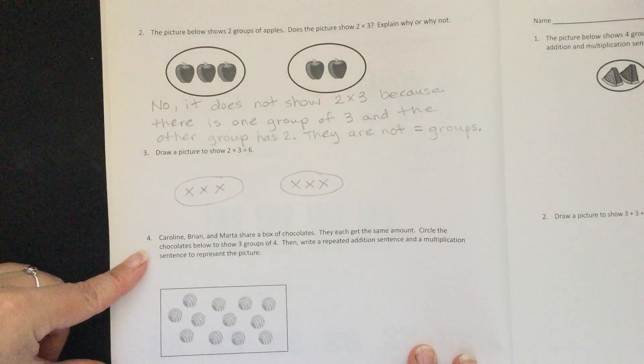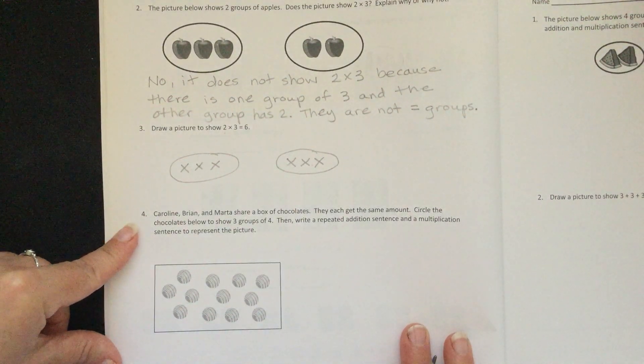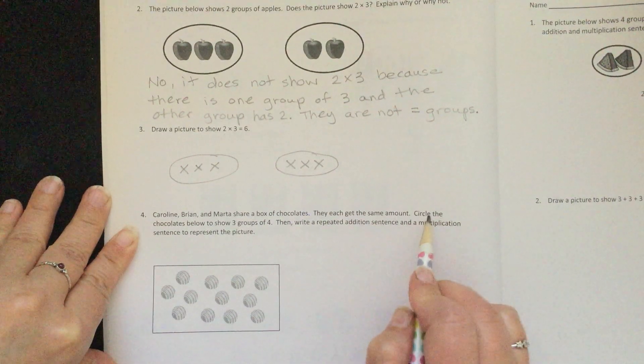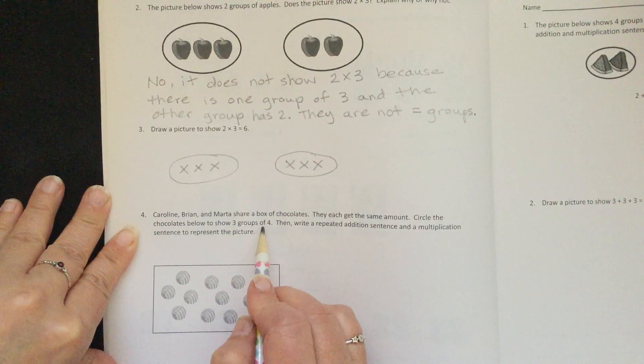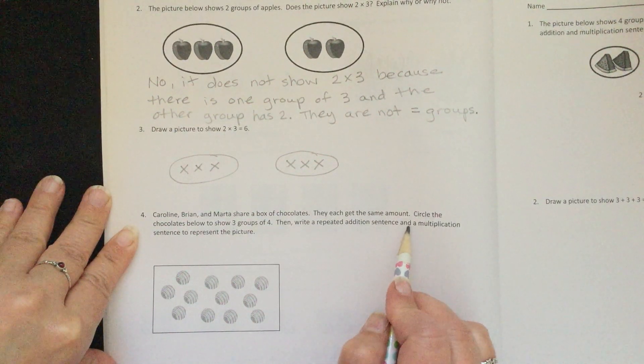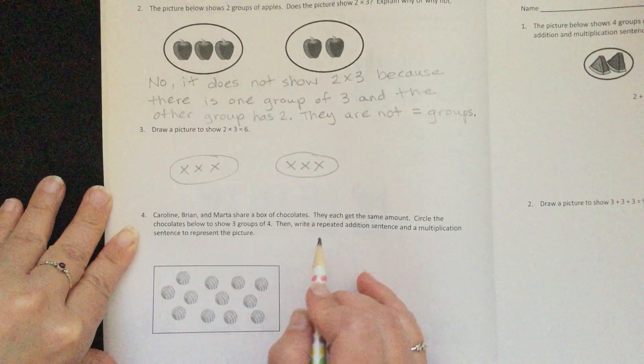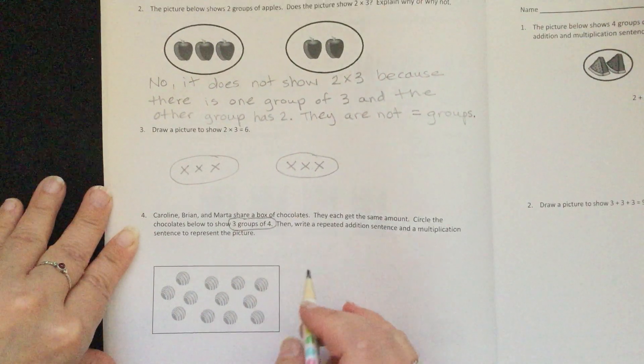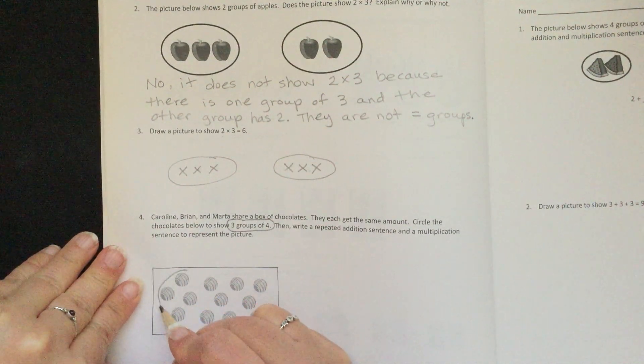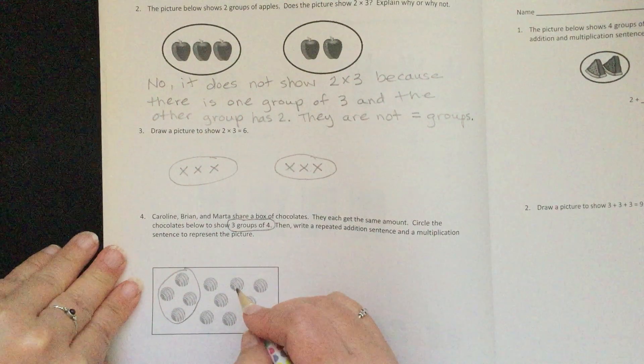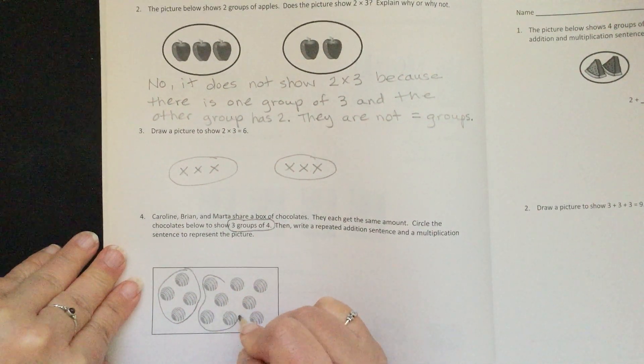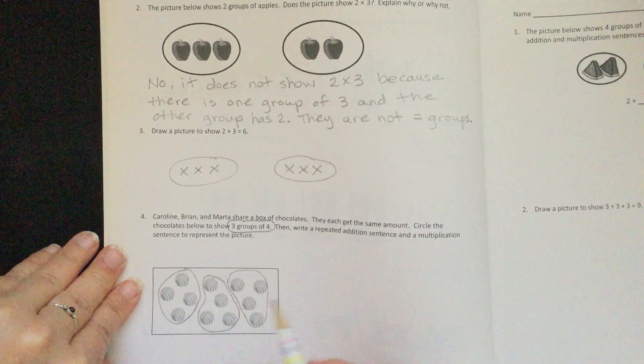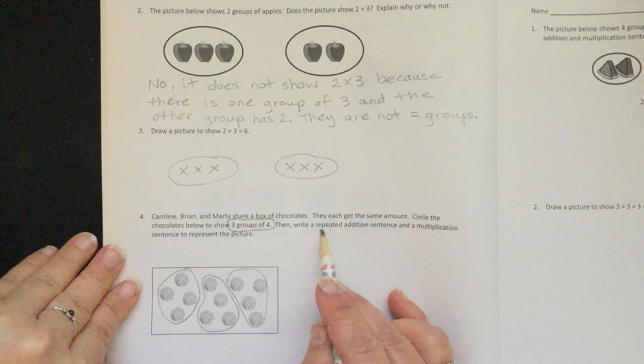We have another word problem here, so we have to do our redraw, write, write method. It says Caroline, Brian, and Marta share a box of chocolates. They each get the same amount. Circle the chocolates below to show 3 groups of 4. Then write a repeated addition sentence and a multiplication sentence to represent the picture. They want us to show 3 groups of 4. We need 4 in each group, so I have 4 here, 4 here, and 4 here. So we have 3 groups, and there are 4 in each group.